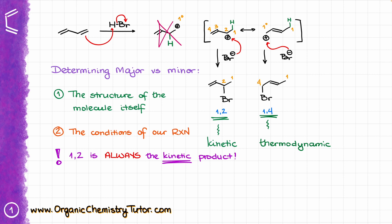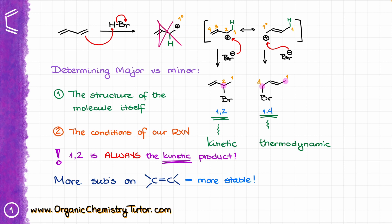To assess thermodynamic stability, we look at the double bond. The more substituents on the double bond, the more stable it is. In the case of the 1,4-product, the double bond is attached to two substituents, while the double bond in the 1,2-product is only attached to one other carbon. So the 1,4-product has a more substituted double bond and is therefore more stable.